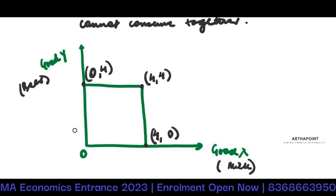The reason is that four comma four is of no use to me, because at any point in time I can either consume this or this — I cannot consume both. So because I cannot consume the two things together, whether X equals Y, or only X, or only Y, all give me the same utility.